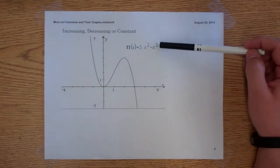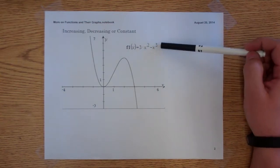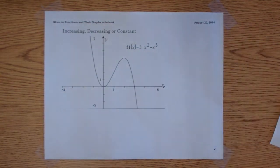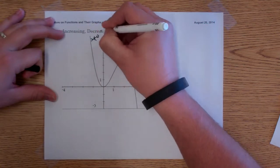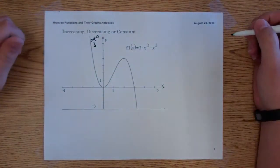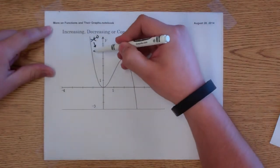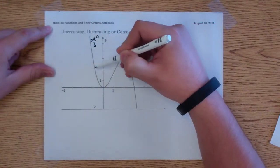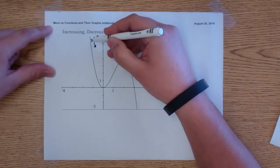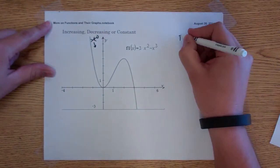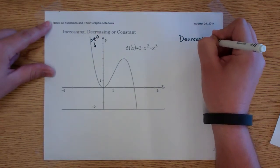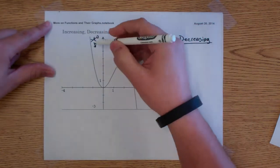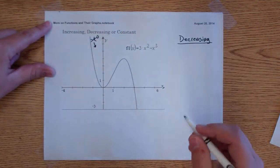Here we have the graph of a function — this is 3x squared minus x cubed. In order to tell if a function is increasing, decreasing, or constant, imagine yourself walking along this graph. What is your altitude doing as you walk toward the y-axis? Your altitude is decreasing, which means the graph is also decreasing on that same interval.